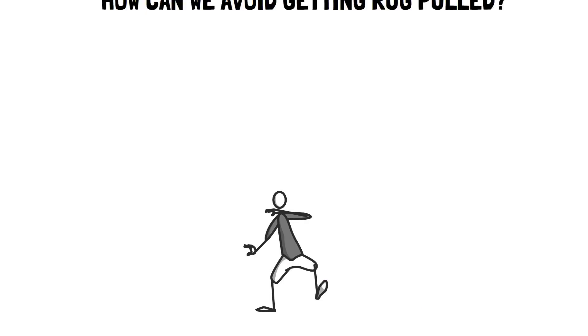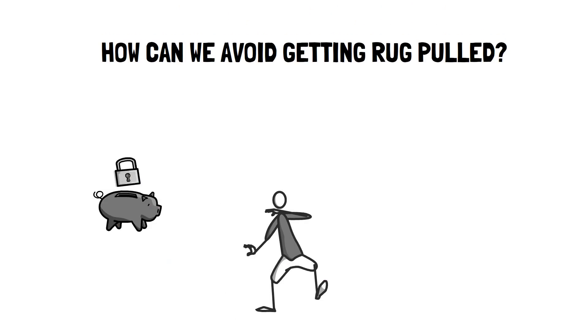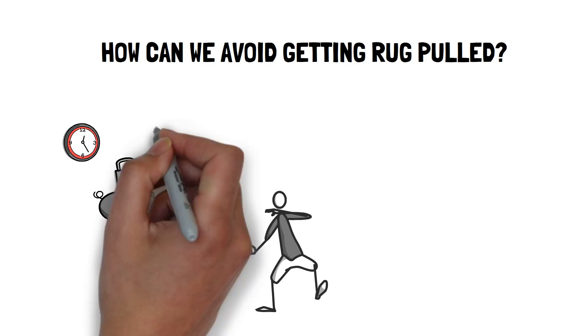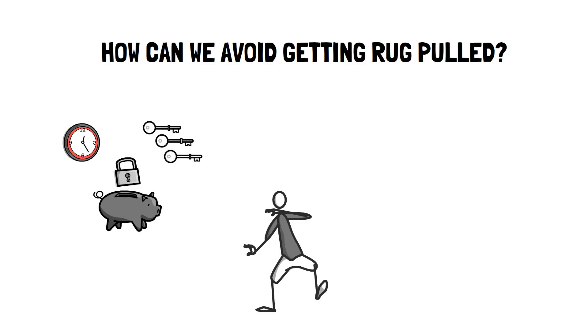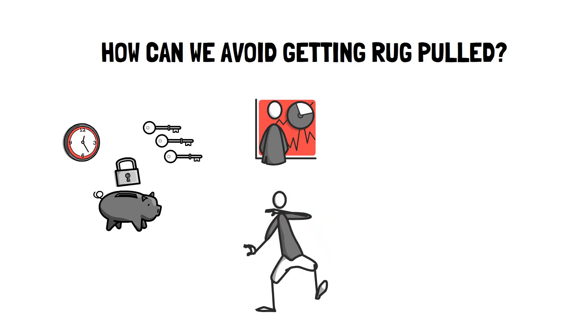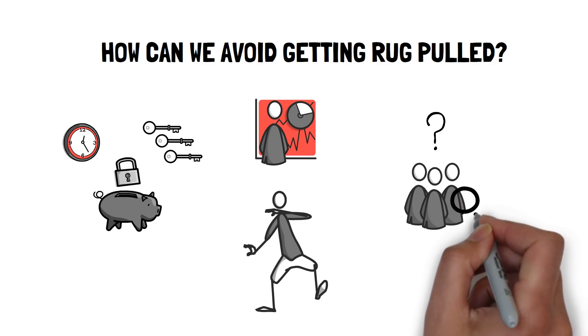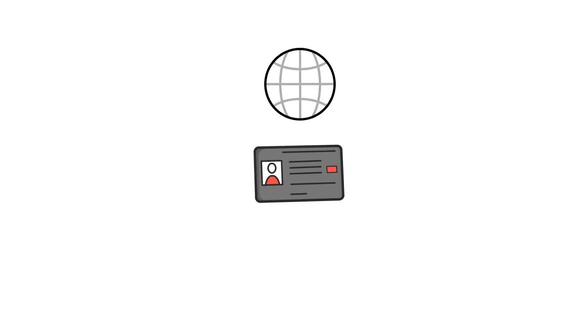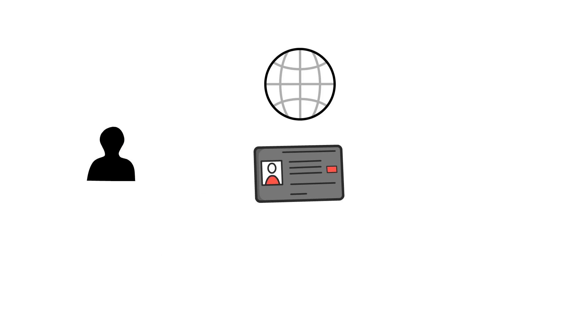How can we avoid getting Ragpulled? Check how the liquidity is locked. Is there a time lock? Is there a multisig? Do your research into the project. Find out who is backing it and what is the purpose of the project? Is the team known? If they are, what can you find about them?